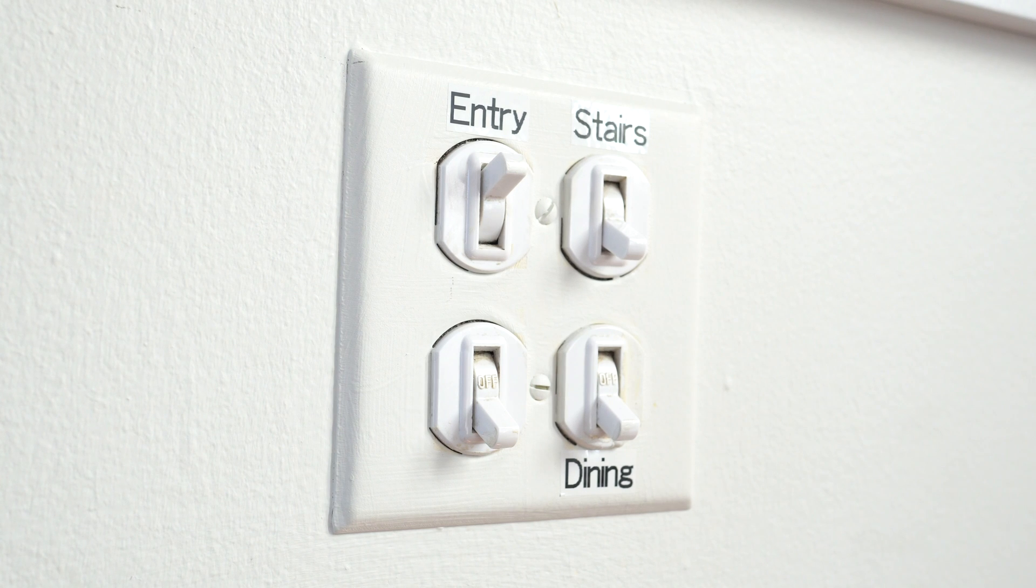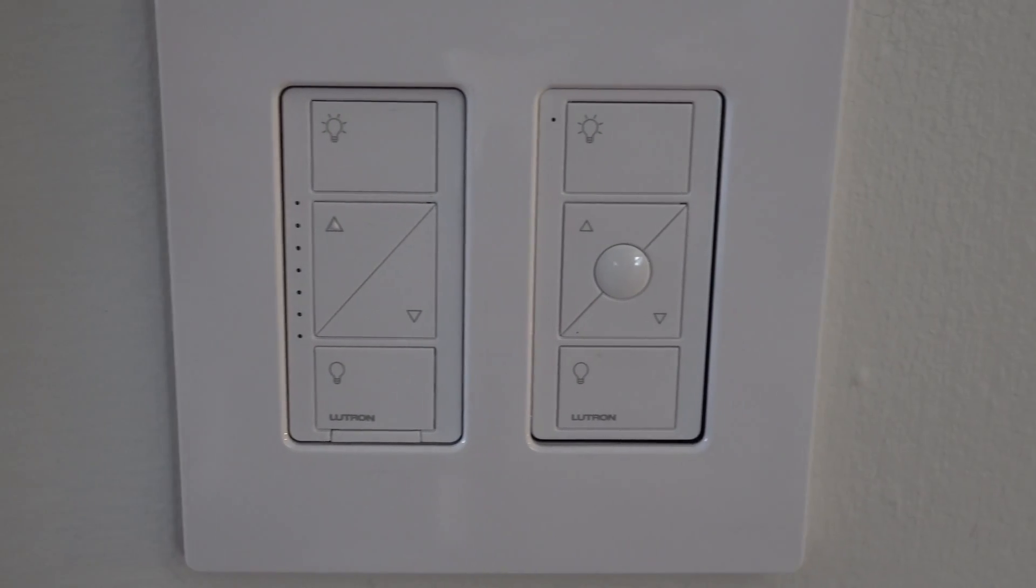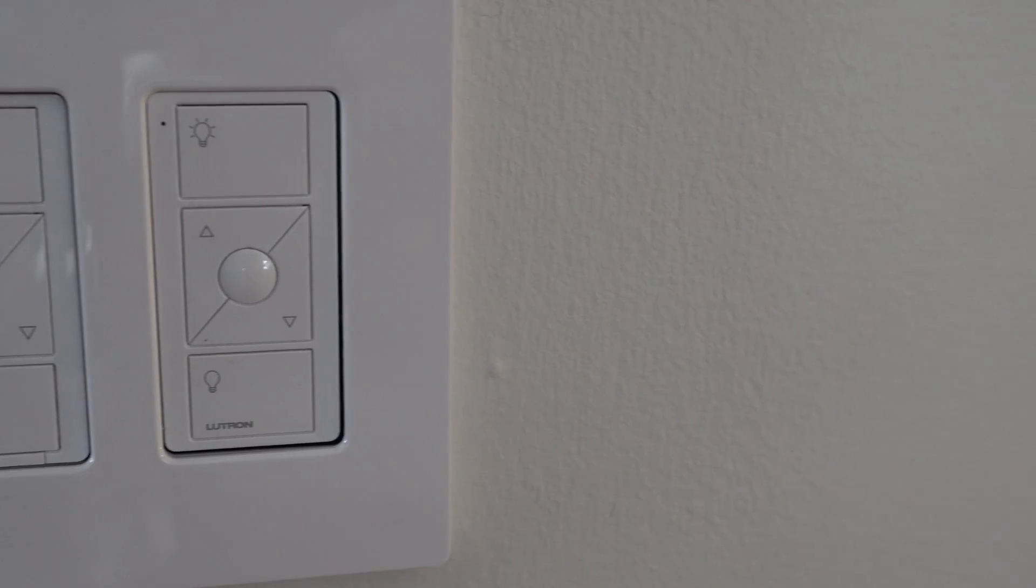But in order to do that I needed to take out some existing switches in the wall, there was actually four switches there, and close out some of the circuits and then replace them with two Lutron dimmer switches, or actually in this case it's a Lutron dimmer switch and a Pico remote.